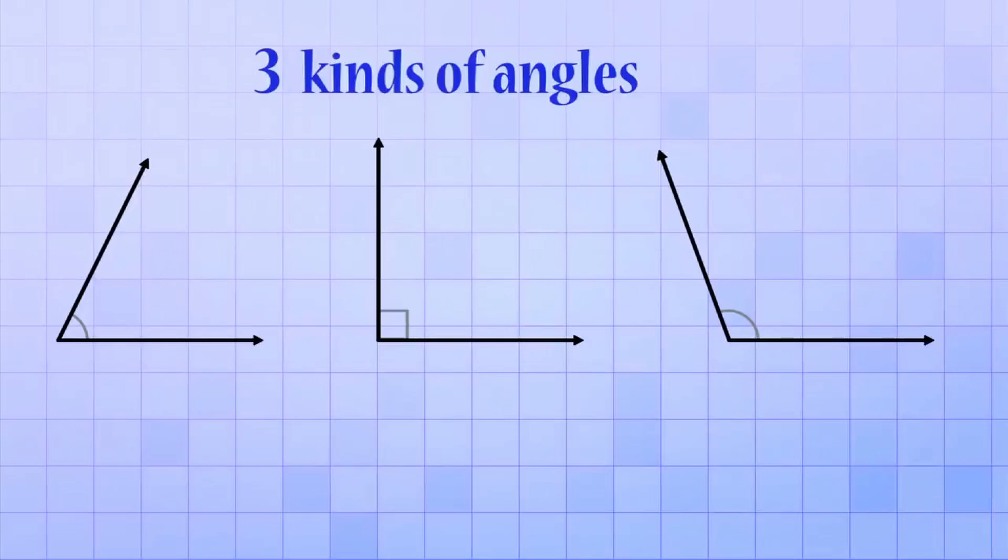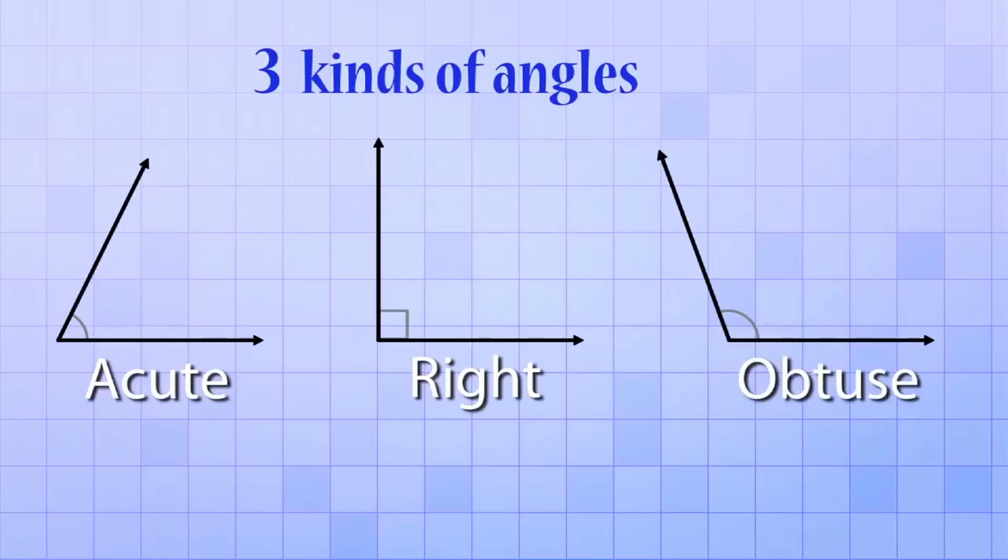So there are three main kinds of angles that you need to know: the right angles, the acute angles, and the obtuse angles.